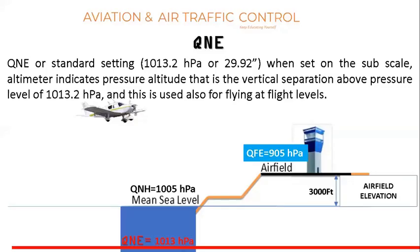QNE, or standard setting of 1013.2 hectopascal, when set on the subscale, causes the altimeter to indicate pressure altitudes. Pressure altitudes are equal to flight levels — that is, vertical separation above the pressure level of 1013 hectopascal. This is used for flying above transition levels.